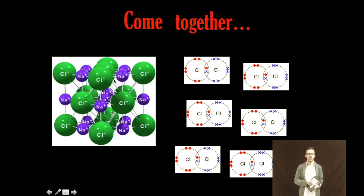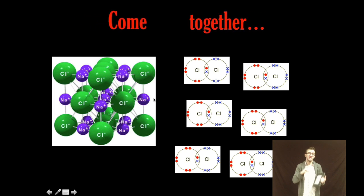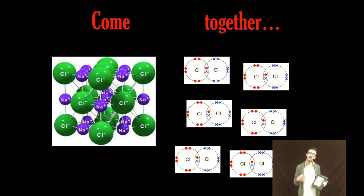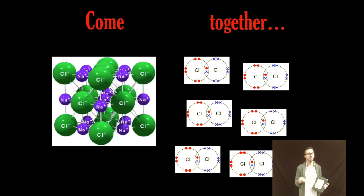in an ionic compound, recall that we don't have those discrete units. We have these crystal lattices. And the formula unit just shows us the smallest ratio of ions to give us an overall neutral charge. Now,